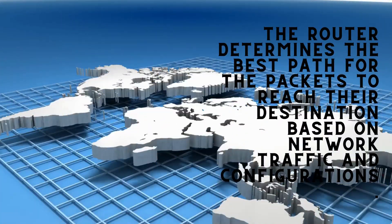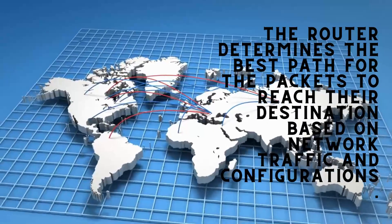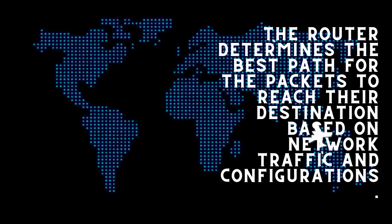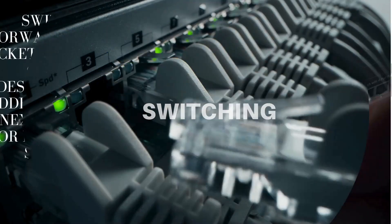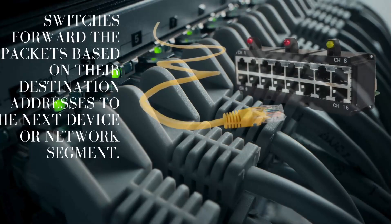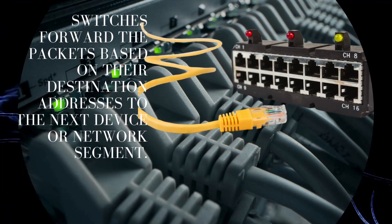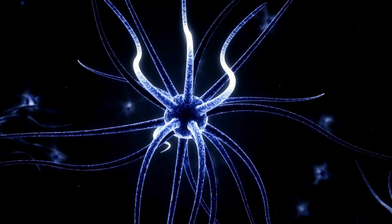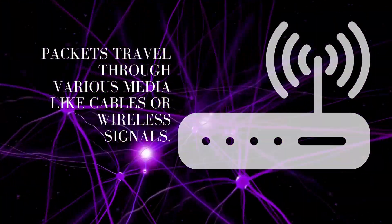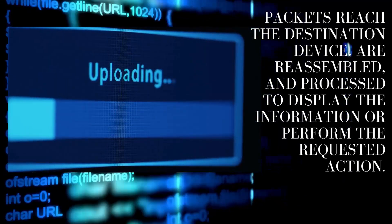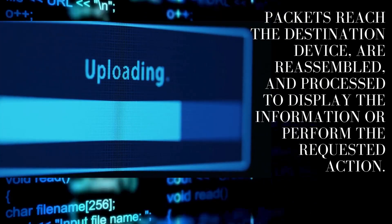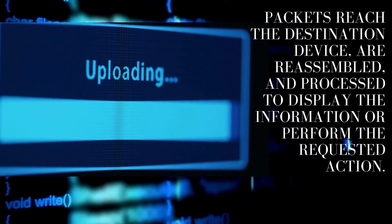Routing: the router determines the best path for the packets to reach their destination based on network traffic and configurations. Switching: switches forward the packets based on their destination addresses to the next device or network segment. Transmission: packets travel through various media like cables or wireless signals. Arrival: packets reach the destination device, are reassembled, and processed to display the information or perform the requested action.